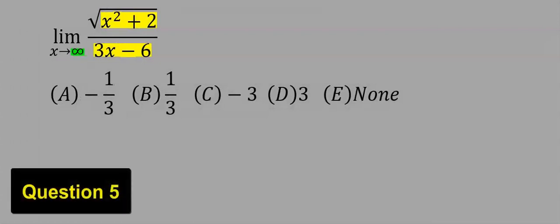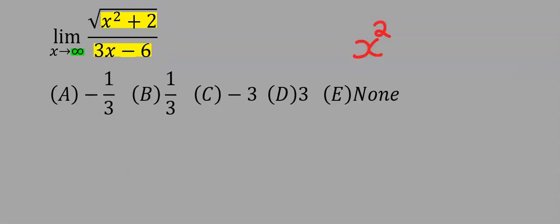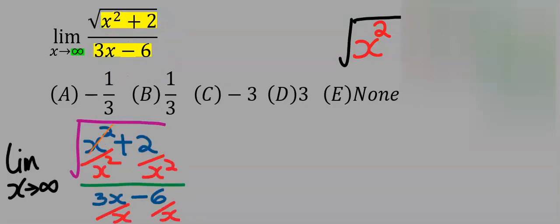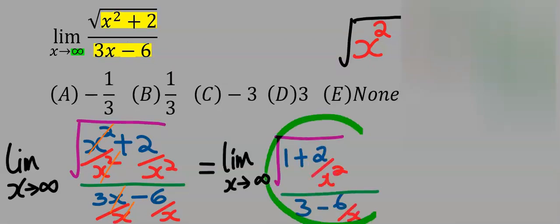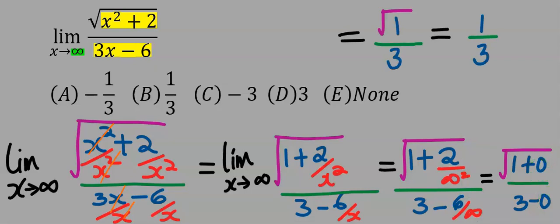Next, in this problem we consider the highest power of x in this expression. You can see it is x to the power of 2 because of the presence of this square root. We divide everything at the numerator by x squared, and at the denominator we divide everything just by x. This cancels with this and x cancels with x. We take the limit of the remaining function, inputting infinity — any number that divides infinity is 0. Square root of 1 is 1, and our answer is 1 over 3, which is option B.